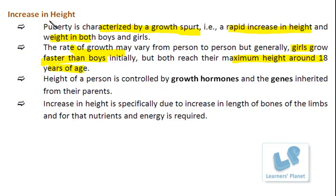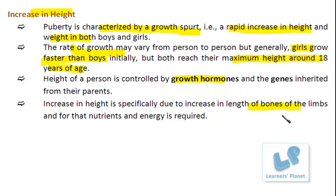The increase in height of a person is affected by two basic things. One is growth hormones — hormones secreted by the pituitary gland. These growth hormones specifically enlarge or increase the length of the bones of the limbs, which brings about the increase in height. As the bones increase in length, new cells are being formed, and more energy is needed. Therefore, individuals require nutritional food and energy at this age, and a person should take care of a balanced diet to fulfill this basic need.